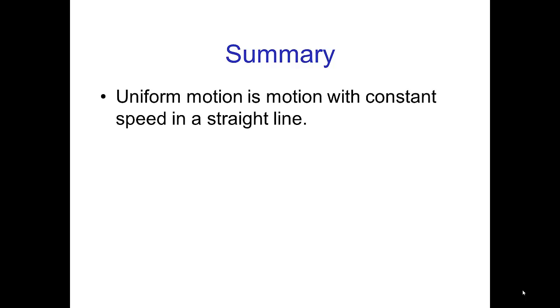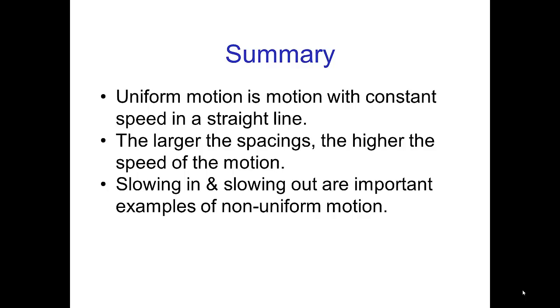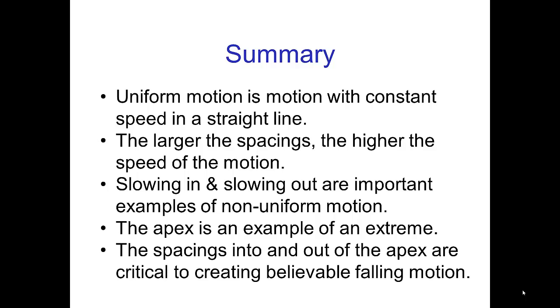In summary, uniform motion is motion with constant speed in a straight line. The larger the spacings, the higher the speed of the motion. Slowing in and slowing out are important examples of non-uniform motion. The apex is an example of an extreme. And the spacings into and out of the apex are critical to creating believable falling motion.